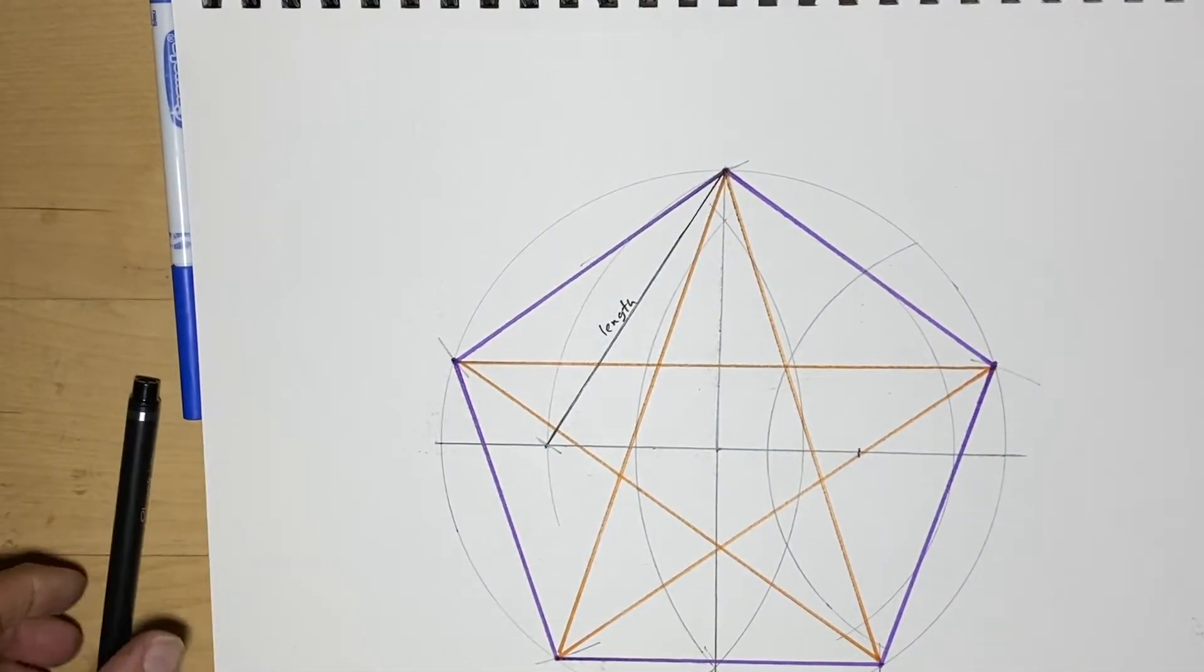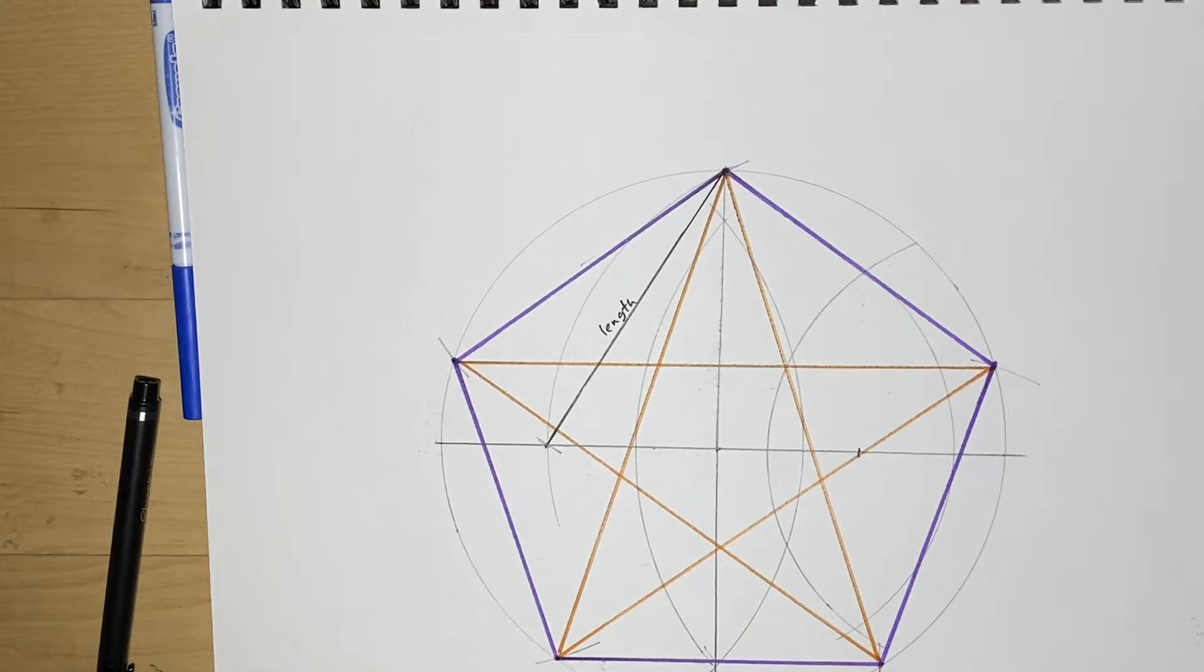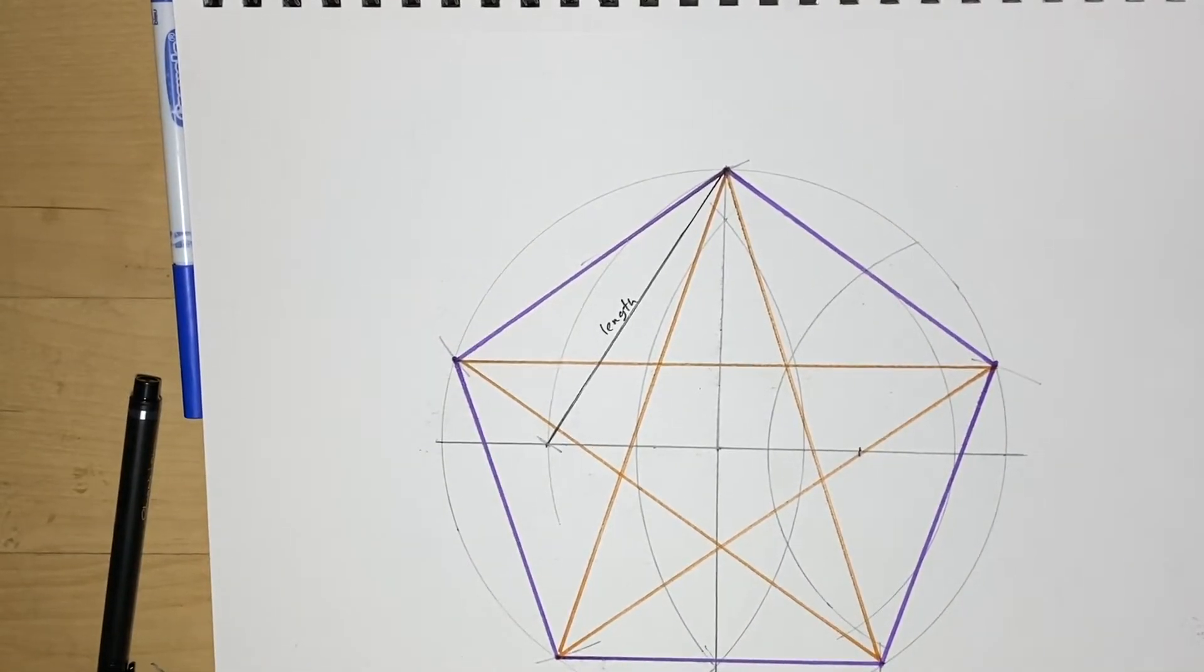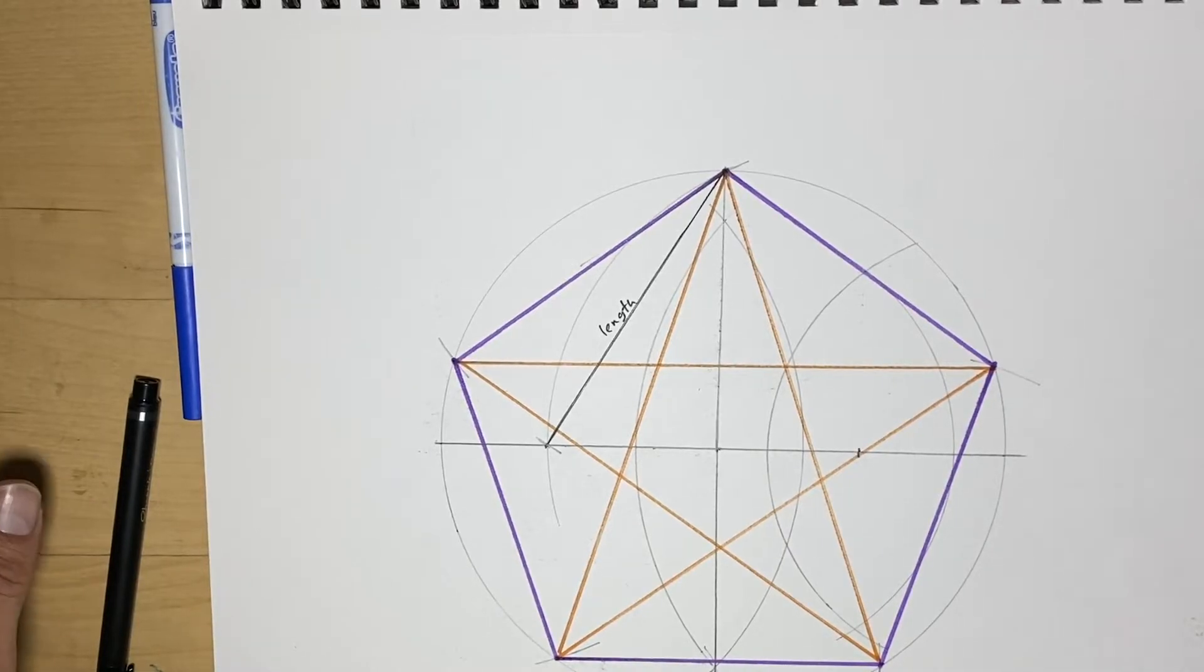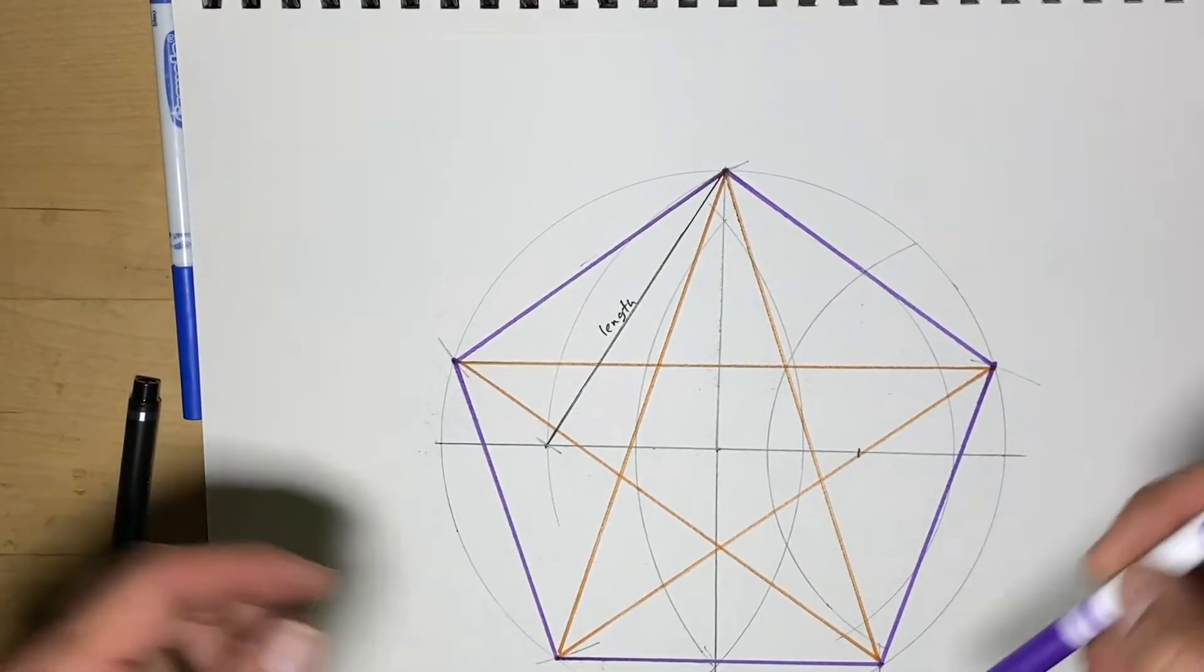I have another video describing how the number Phi, which is 1.618 and is related to the Fibonacci spiral, is contained in a few places in this picture. From here to here divided by here to here will give you the number Phi.